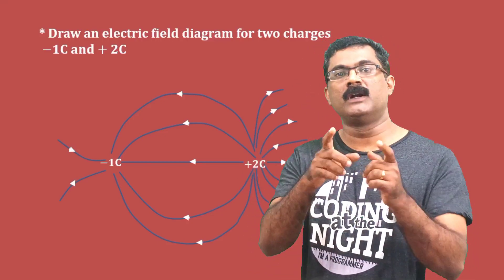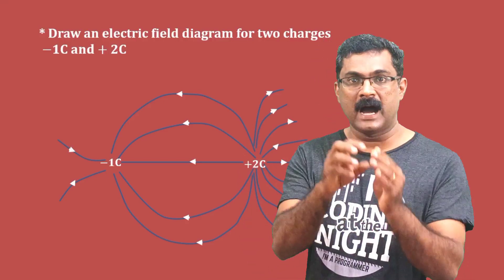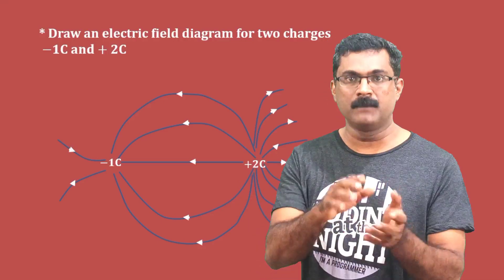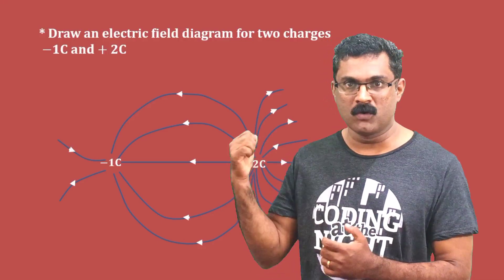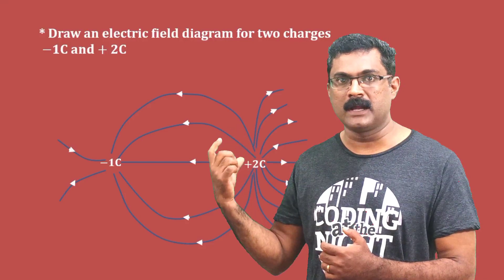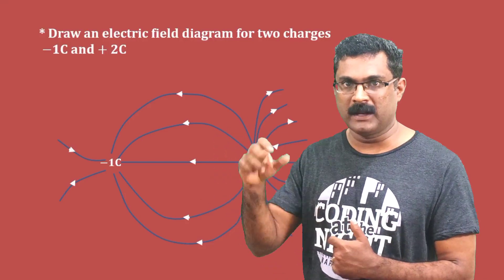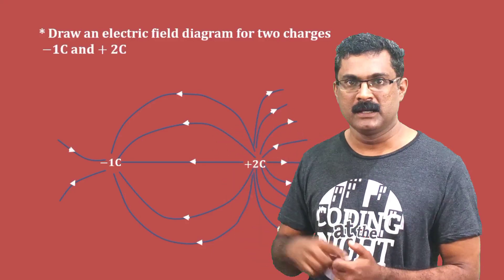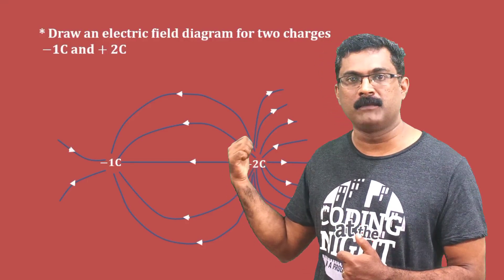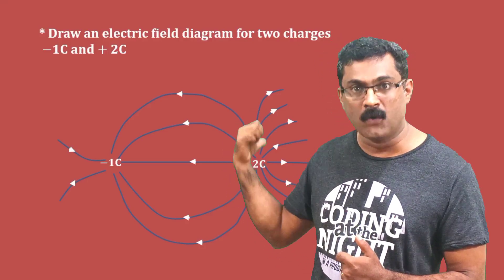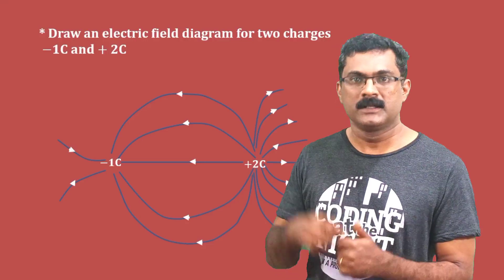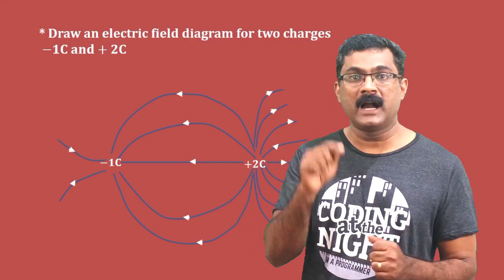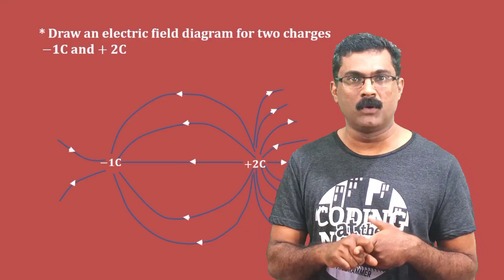We use the formula Q1 by Q2 equal to N1 by N2, because the number of field lines is directly proportional to the magnitude of the charge. For example, if N1 equals 7 and N2 equals 14, then Q1 by Q2 equals 7 by 14, which is 1 by 2. Therefore Q2 is equal to 2 times Q1. You can use this to compare the charges.